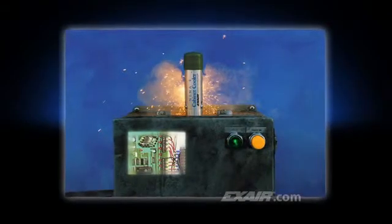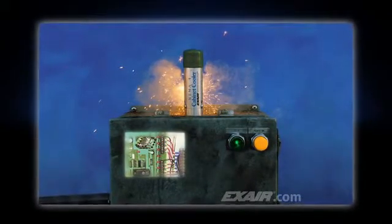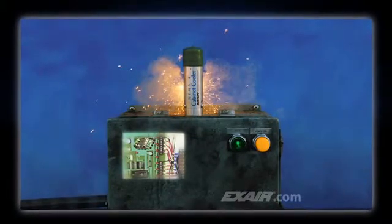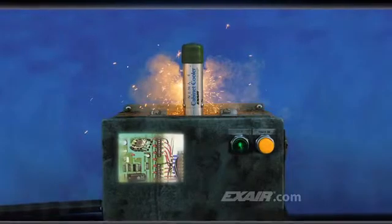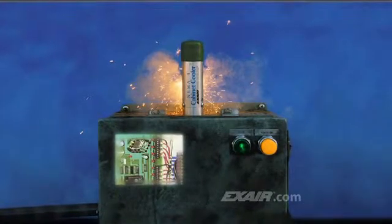They pass 1 SCFM or 28 SLPM of air through the cooler when the solenoid valve is in the closed position. When the thermostat detects high temperature, it energizes the solenoid valve to pass full line pressure to the cabinet cooler, giving it its full cooling capability.